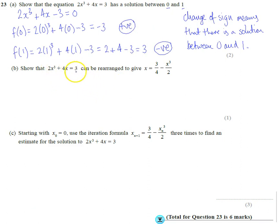Now to show that this can be rearranged to give x = 3/4 - x³/2. You've got to think ahead. Can you see there's an x cubed here, and we've got 2x cubed here, but that's on the same side as the 3. The 3 here has been divided by 4, so we're probably going to keep this bit on its own.